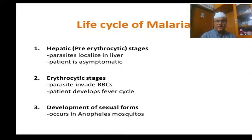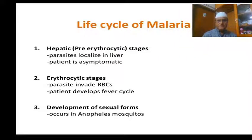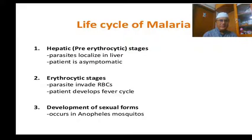The life cycle of Plasmodium malaria has three stages: the hepatic or pre-erythrocytic stage, the erythrocytic stage, and the development of sexual forms.